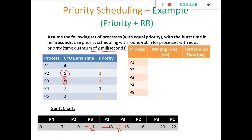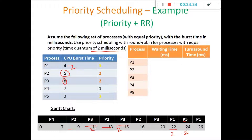P1 gets started with the same 2 milliseconds as time quantum. P1 executes for 2 milliseconds, then it moves to P5, which executes for 2 milliseconds. P1 still has 2 milliseconds remaining, so the CPU is allocated to P1 again — it completes its execution for 2 milliseconds. Then the CPU goes to P5; for P5, 2 milliseconds already completed, so only 1 millisecond is remaining. P5 completes its execution by taking 1 millisecond.